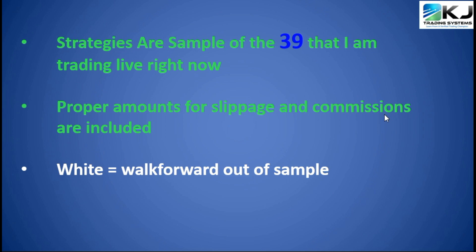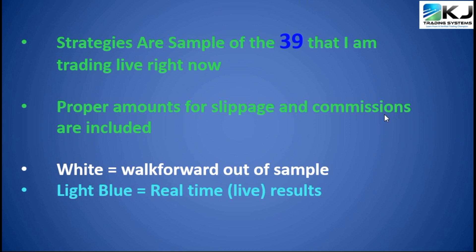In the curves you're going to see, the area in white is the walk-forward out-of-sample test — this is the resulting equity curve when you develop the strategy. When that turns to light blue, everything in the light blue is considered real-time results. So the way to think about this is: you develop the strategy, you end development right at the start of the blue, then you start watching the strategy live and see how it performs. The blue area is the real key — you want to see good performance in the blue, but you also want to see good performance in the walk-forward white area. That's your development phase, and that walk-forward, because of the method of doing it, is actually out-of-sample data — it's not optimized in-sample. If some of these terms are confusing, take a look at some of my other videos.